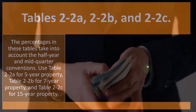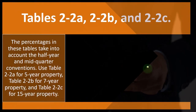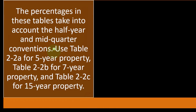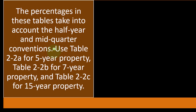Tables 2-2A, 2-2B, 2-2C — the percentages in these tables take into account the half-year and mid-quarter conventions. When you think about the calculation of depreciation, it's fairly straightforward, and then it gets more complicated when you throw in the fact that you have this partial year in the first and last years, and that's where the conventions come in.